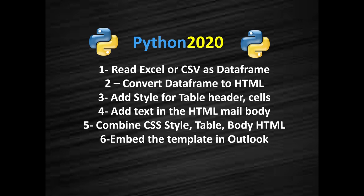Then we will add the style, which is the table header style for formatting. We will also add some text — in the email you will see the table along with a few words. Then we will combine all the CSS, the HTML table, and the HTML body, and finally we will embed that final outcome in the email.